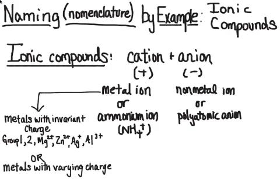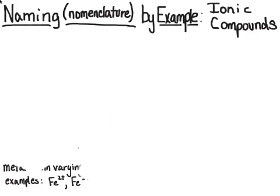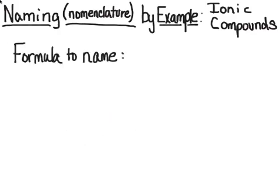The example I'm going to give is iron. Iron can have a plus two or a plus three charge, so you will need to know the common metals that have multiple charges and the charges they can have. I'll also teach you how to deduce the charge of a metal from its place in a compound.